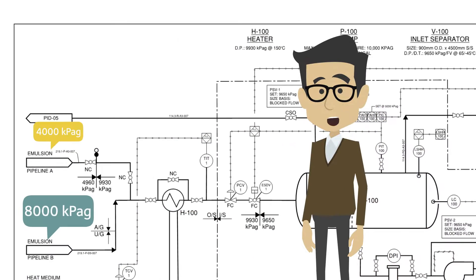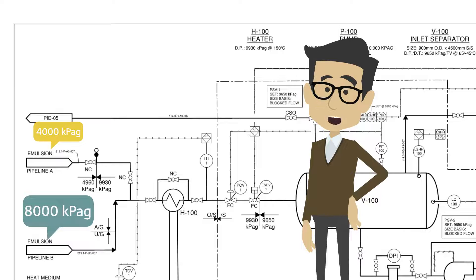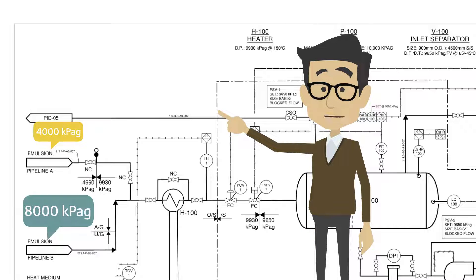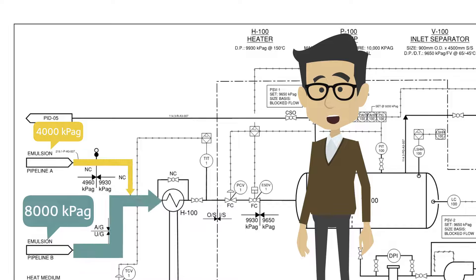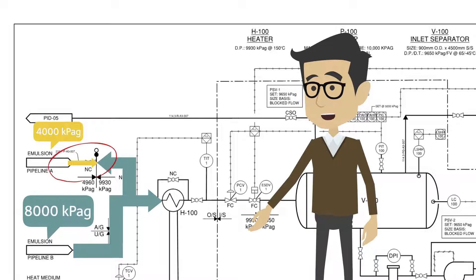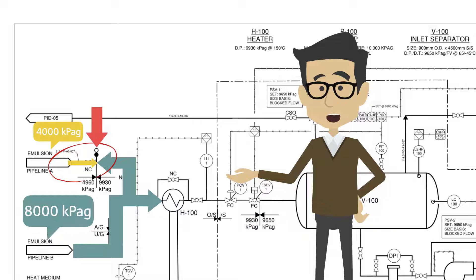It is important to determine the maximum pressure coming into a system to identify potential blocked flow and reverse flow overpressure scenarios. Since the emulsion is coming in at a higher pressure from pipeline B, it may be possible to have a reverse flow scenario causing an overpressure of the piping rated for 4,960 kPaG. This is prevented by this spec blind.